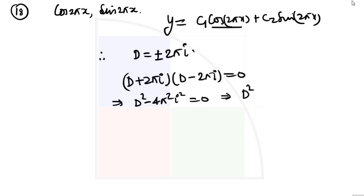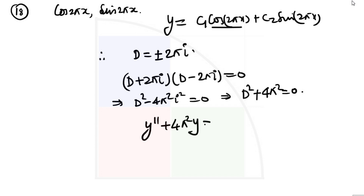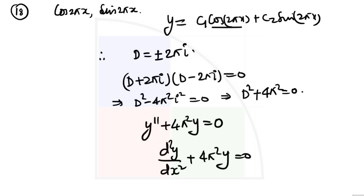The auxiliary equation is (D + 2πi)(D − 2πi) = 0. Since iota squared equals minus 1, that minus 1 makes it plus. So we can write D squared plus 4π squared equals 0. When we open it, the required equation will be y double prime plus 4π squared y is equal to 0. This is the answer for this one. Let us move to the next question.